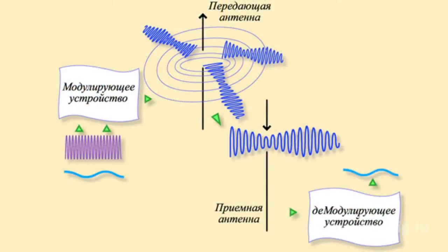Harmonic vibrations with carrier frequency of a certain range are modulated in accordance with the message transmitted. Modulated radio frequency vibrations are actually a radio signal.